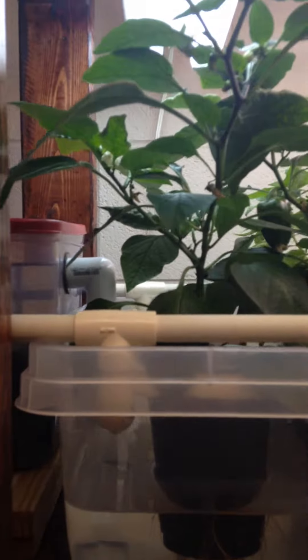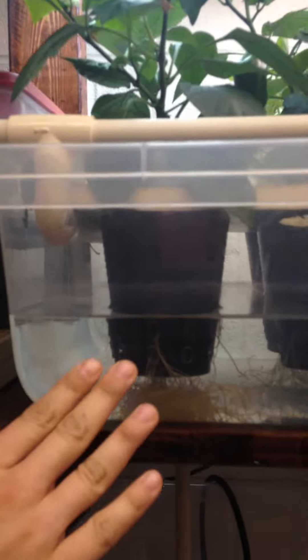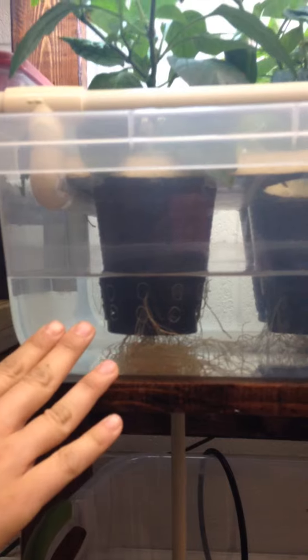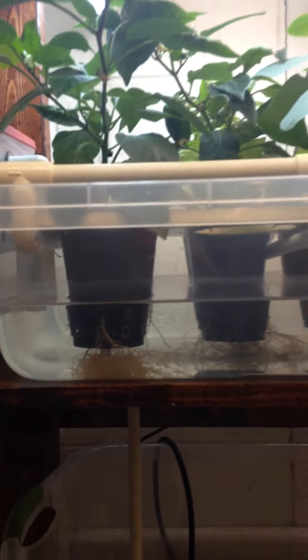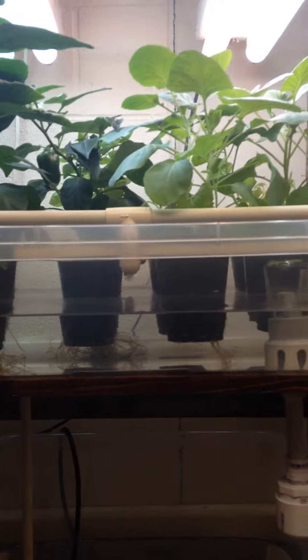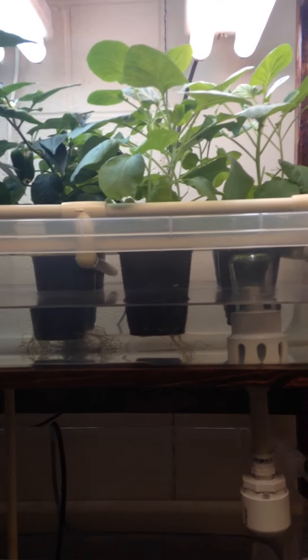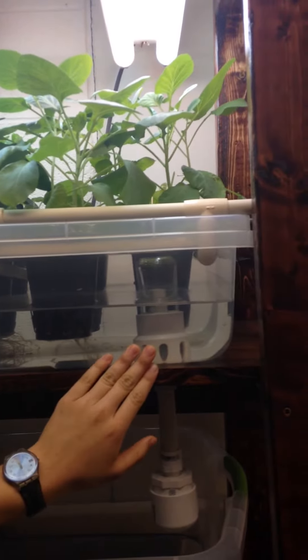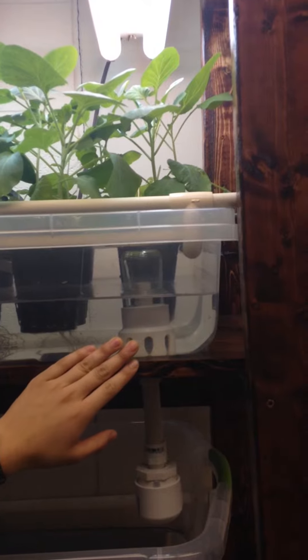water will flow down and enter into the plant grow bed. This grow bed provides the plants inside of it with water and nutrients necessary. As water fills the plant grow bed, water also simultaneously fills the bell siphon.